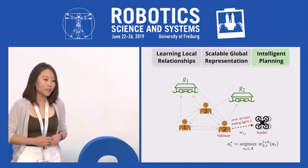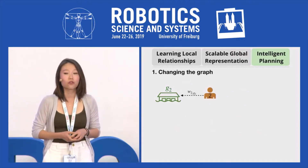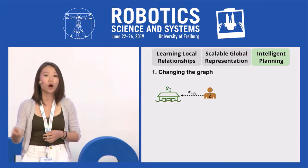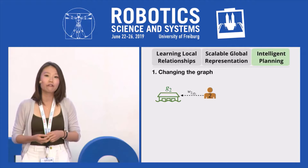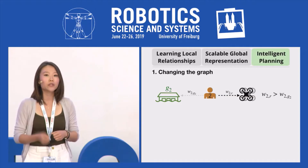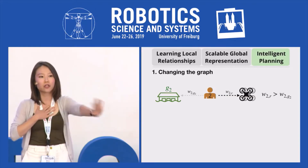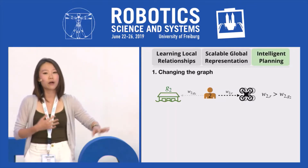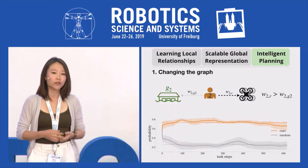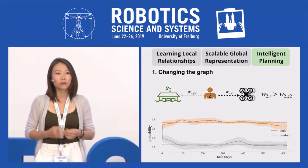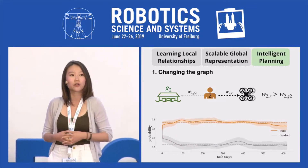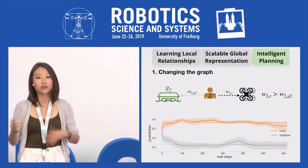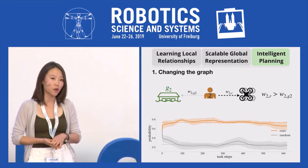We tested our framework in three tasks. In the first one, we wanted to see if we could get the robot to swap an edge in the graph by influencing an agent to follow it instead of some other goal. In our experiments, we found that a robot using our framework was able to successfully influence a simulated human agent to change edges much more effectively than a baseline random policy.